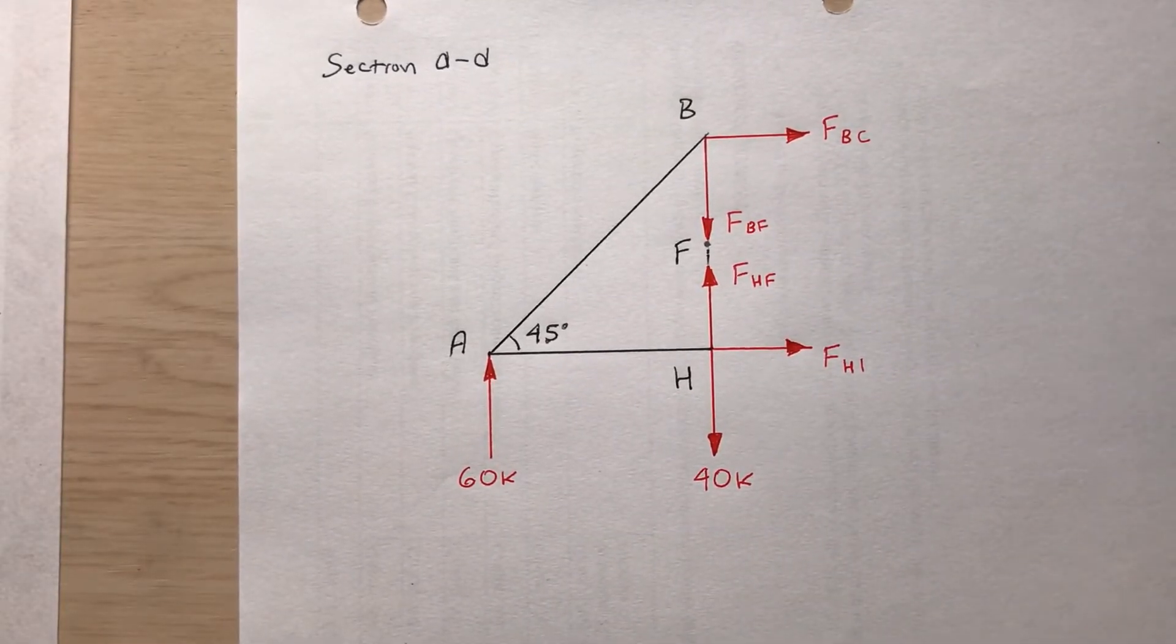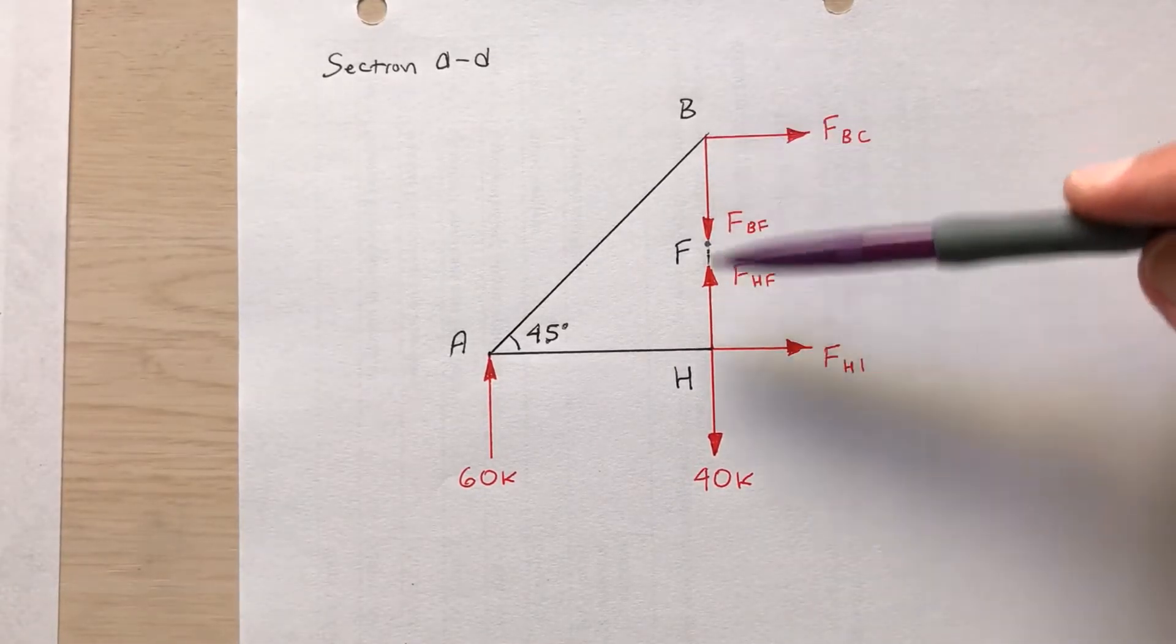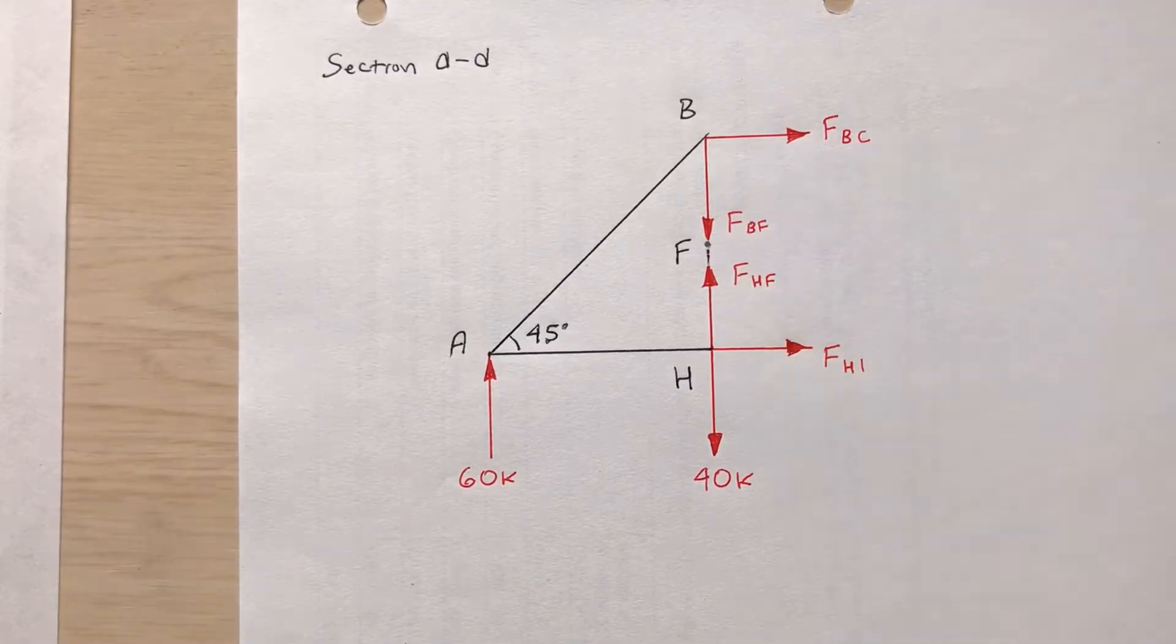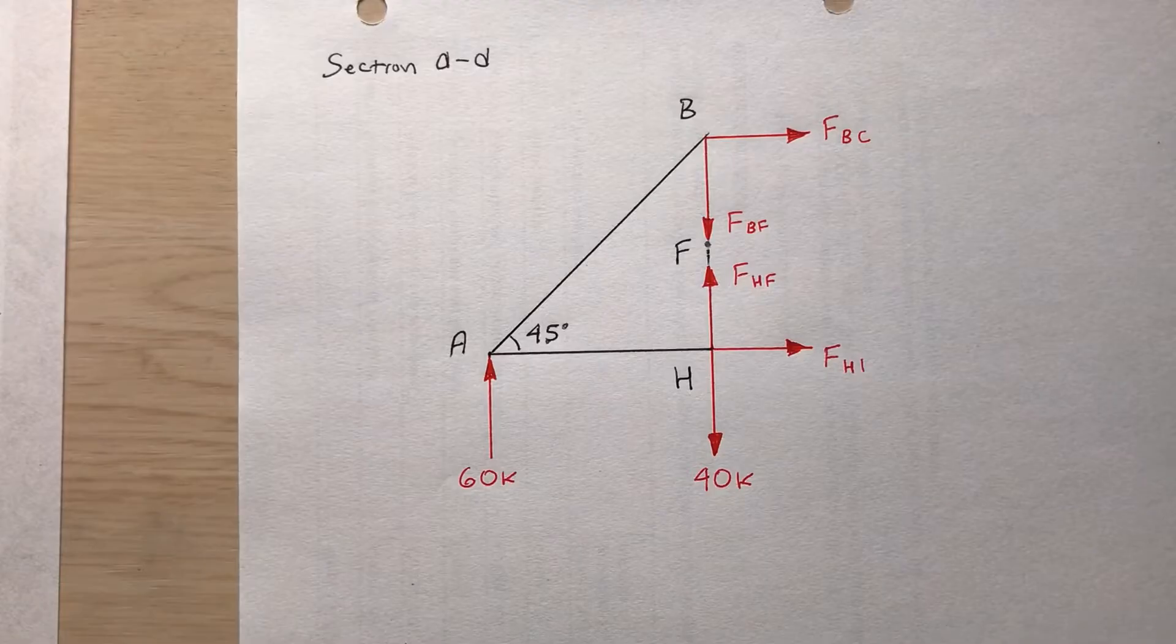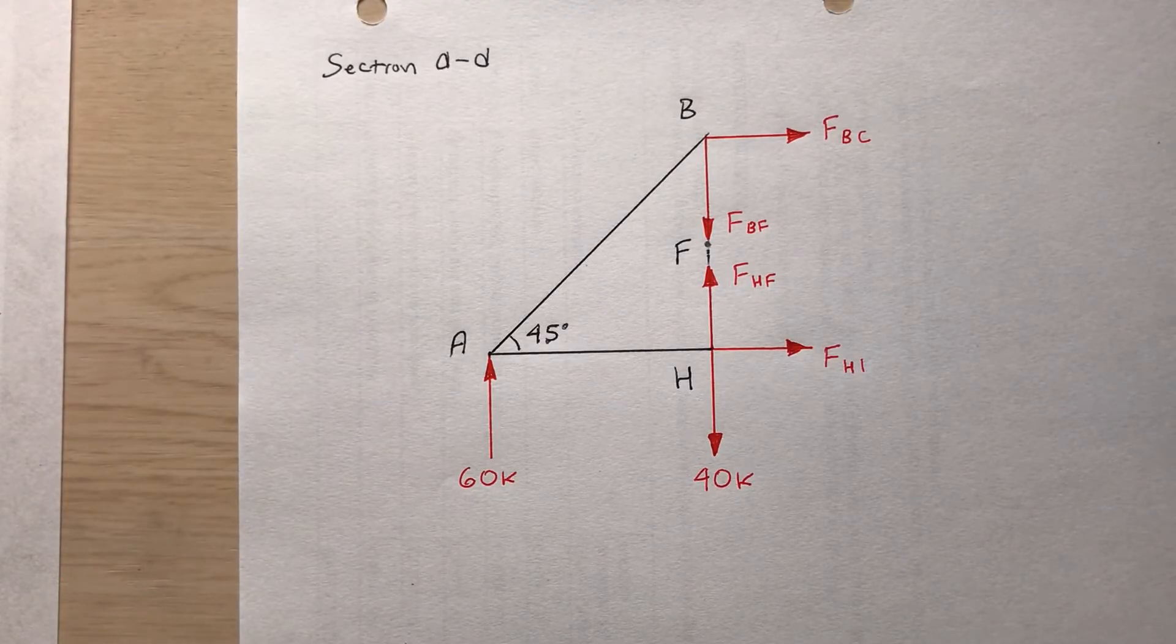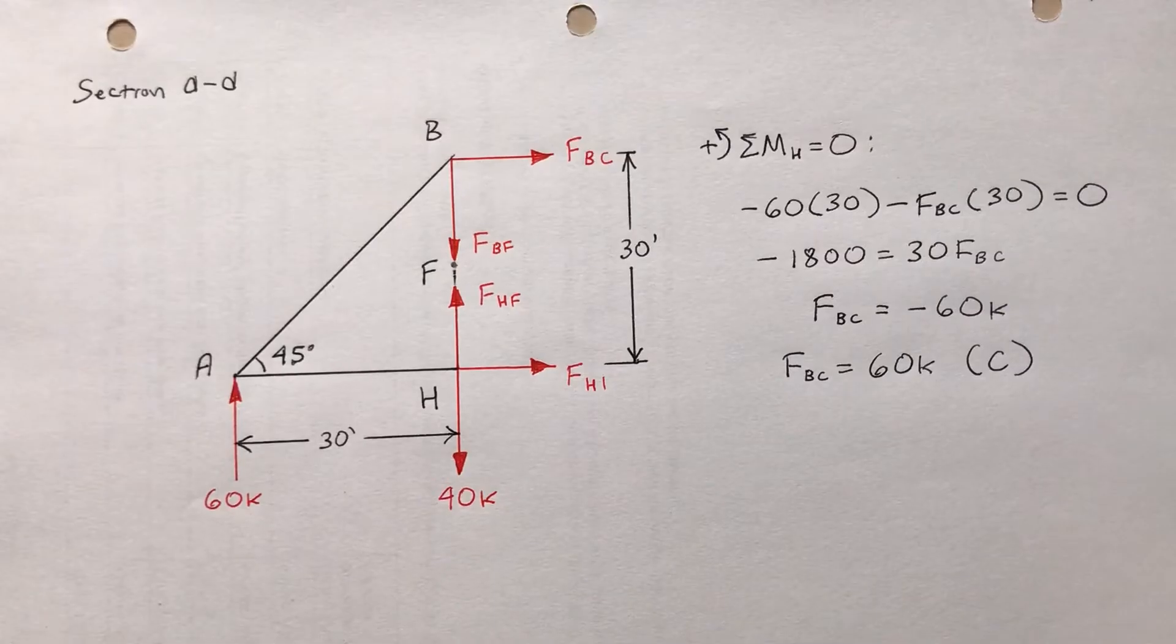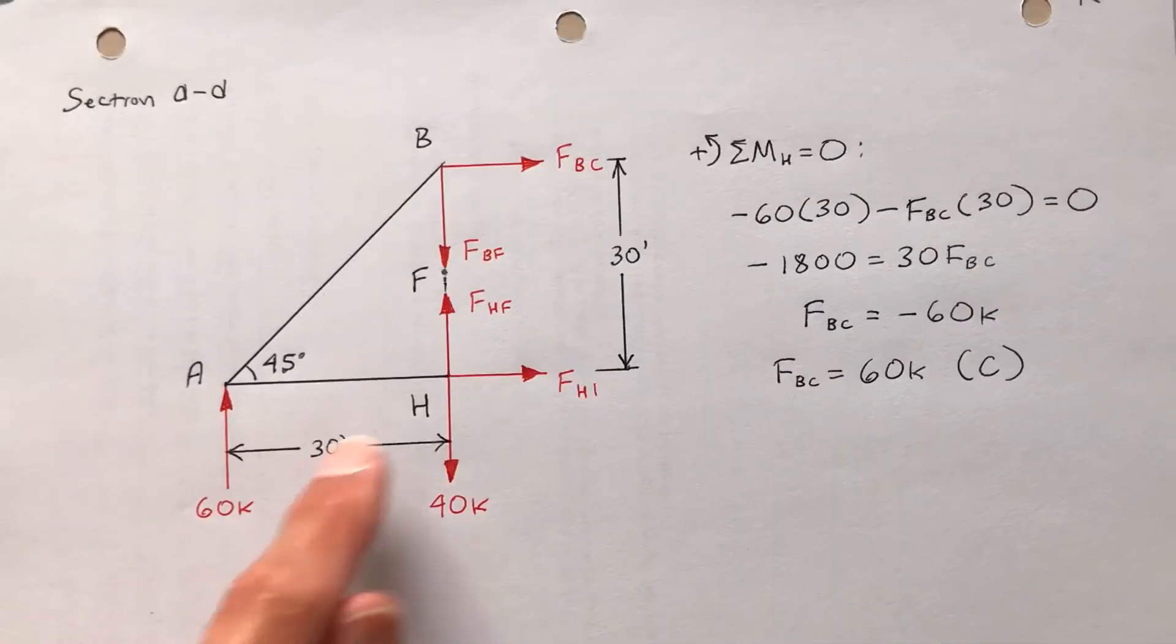And voila. Okay, how is that? Point F is between B and H, but be careful. There's no bar in here. Remember, I cut through here. So here's what I'm dealing with. So now try taking the sum of the moments about point H, and I think you'll be able to determine what F sub BC is. Okay, make sure you throw these dimensions on here. Between A and H, that's 30 feet. Between H and B, that's also 30 feet.